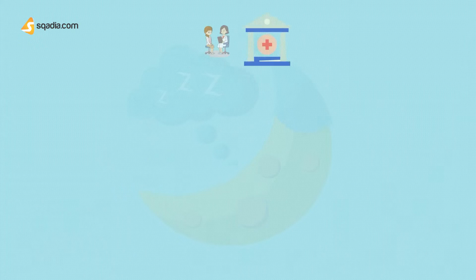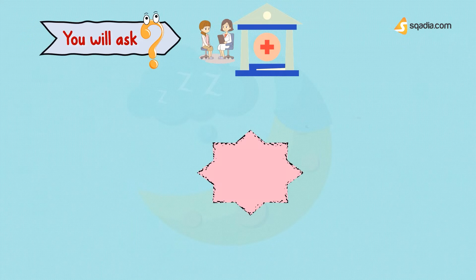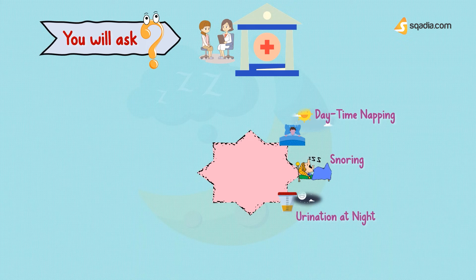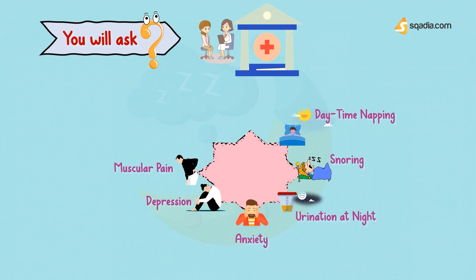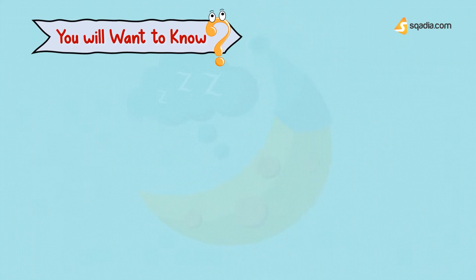On your patient visit, you will ask him about daytime napping, loud snoring, needing to urinate in the middle of the night, anxiety, depression, pains in muscles, chest pain, joint pain, and results of interventions you have tried to improve your sleep.